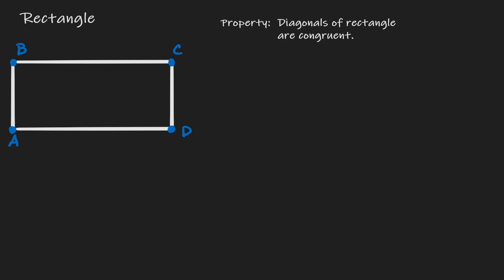Let's put down the information that we know about rectangles. In a rectangle, we know that all interior angles are 90 degrees, and in addition we know that opposite sides are congruent to each other.